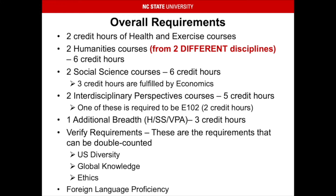All you have to do is find a course you would like to take that is in one of the lists satisfying the humanities, social sciences, or visual performing arts additional breadth requirement. There is a link below this video that has all of the GEP courses listed so you can see which courses will count towards which requirements. Note that ethics is not technically a GEP, but it is a major requirement that can be double counted, which is why it is included here.